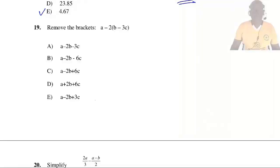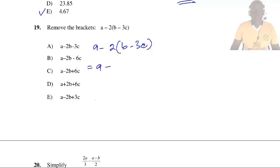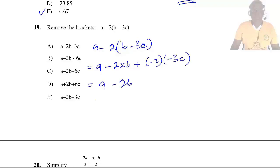Question 19: Remove the brackets from A − 2(B − 3C). Multiplying the items in the bracket by −2: −2 × B = −2B and −2 × −3C = +6C. So the result is A − 2B + 6C. So the answer is C.